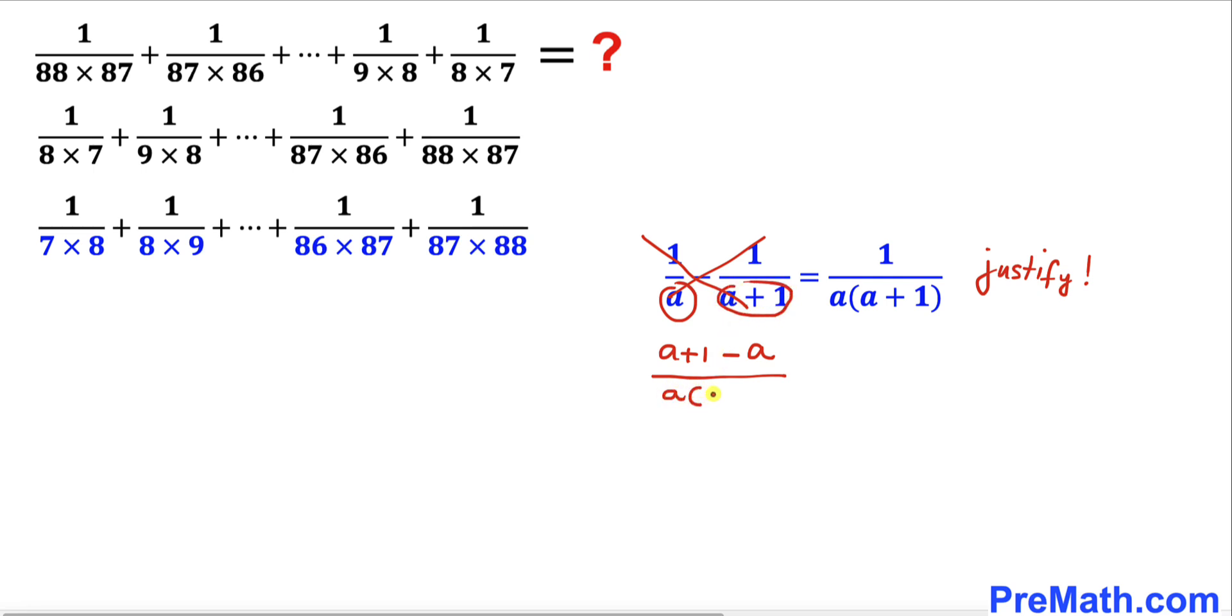That gives us a times a plus 1. Here, a and this negative a cancel out, so we end up with 1 divided by a times a plus 1, which is what we have on the right-hand side.